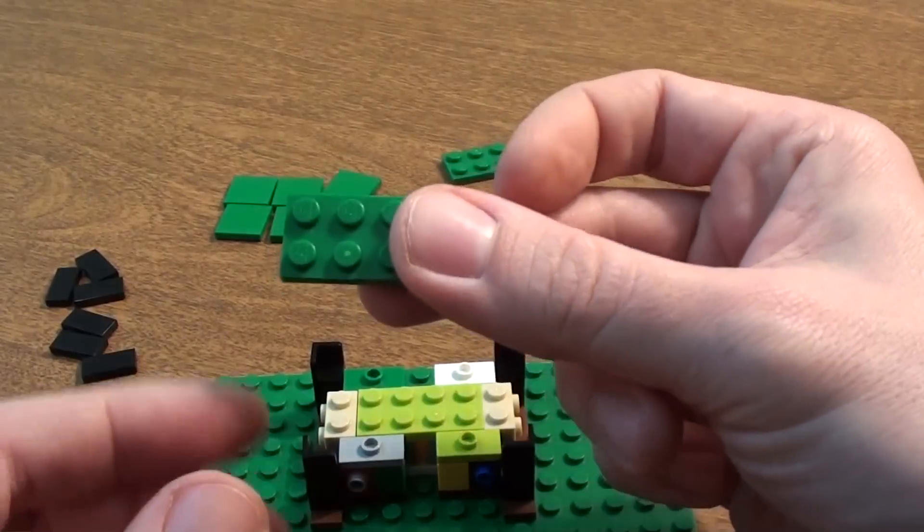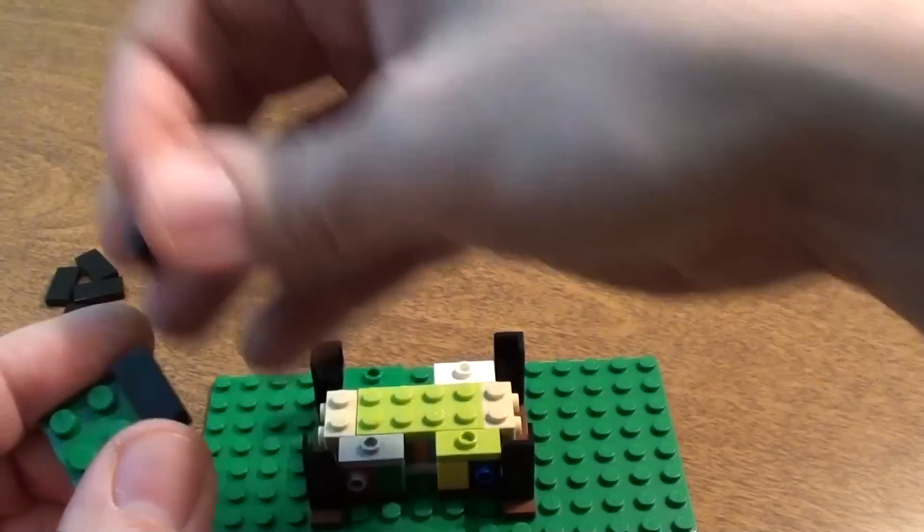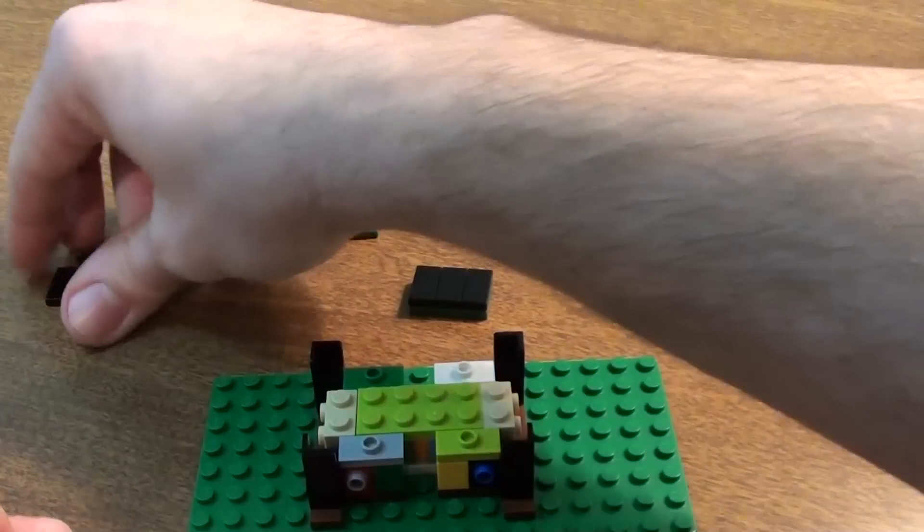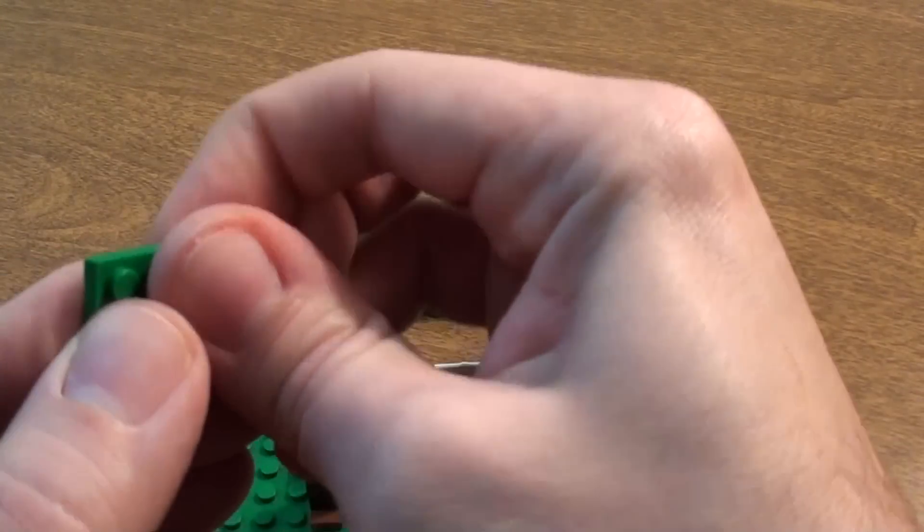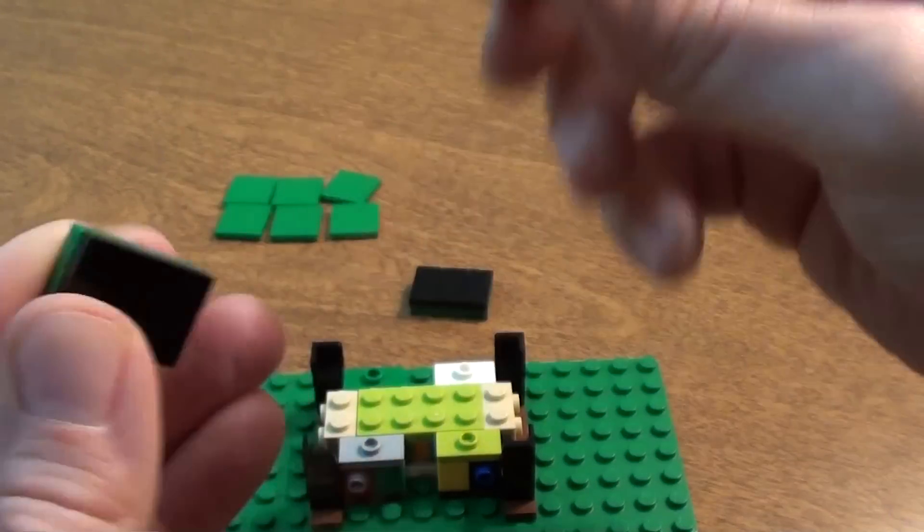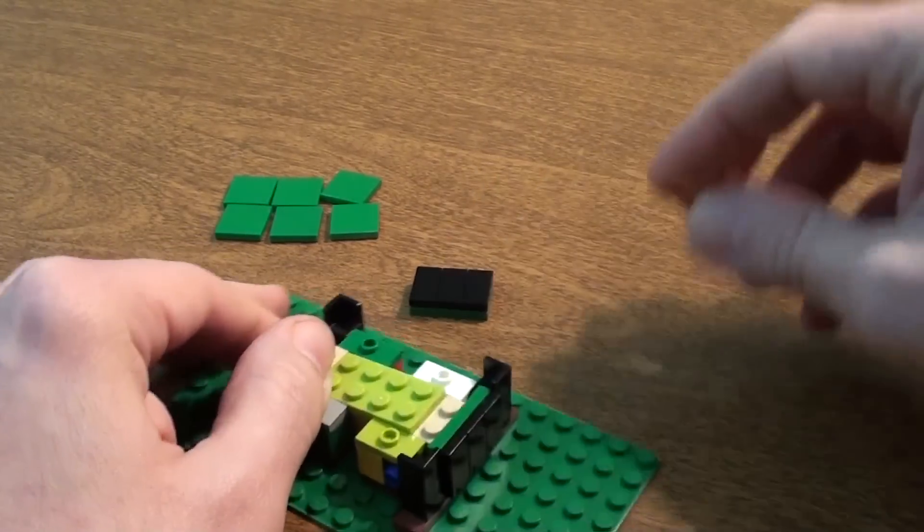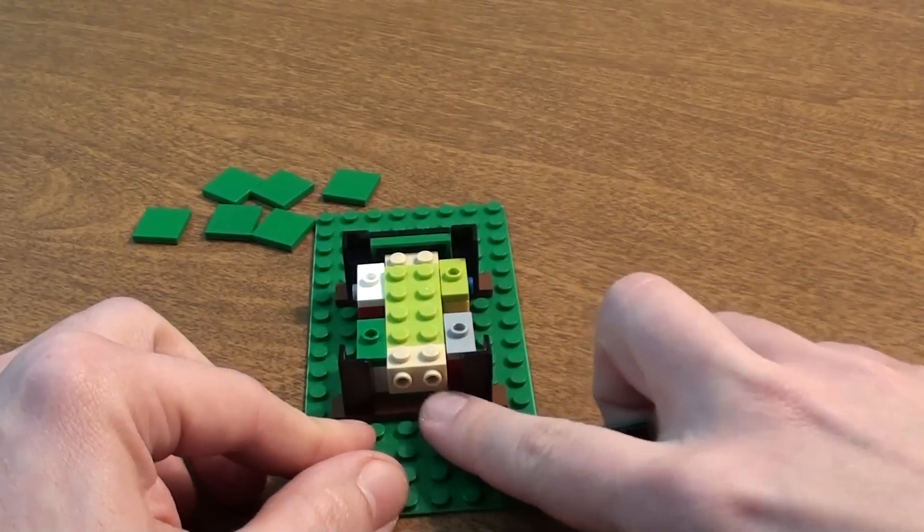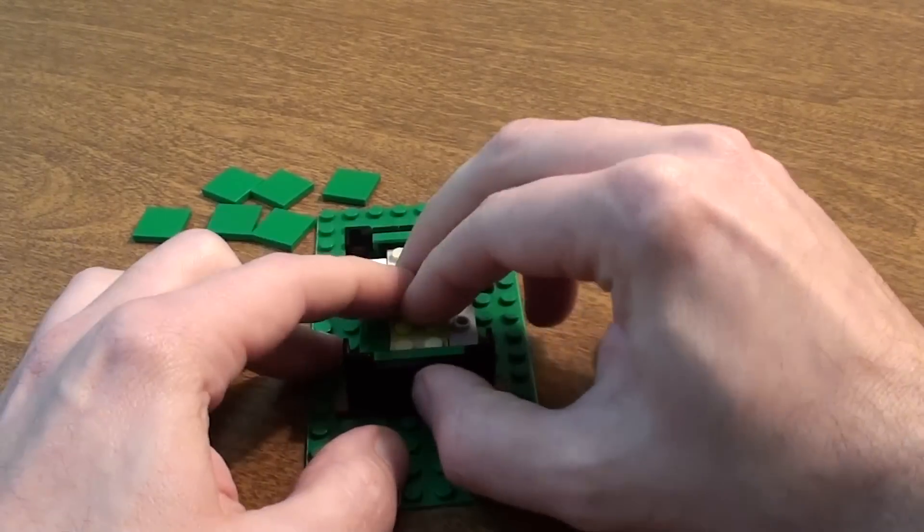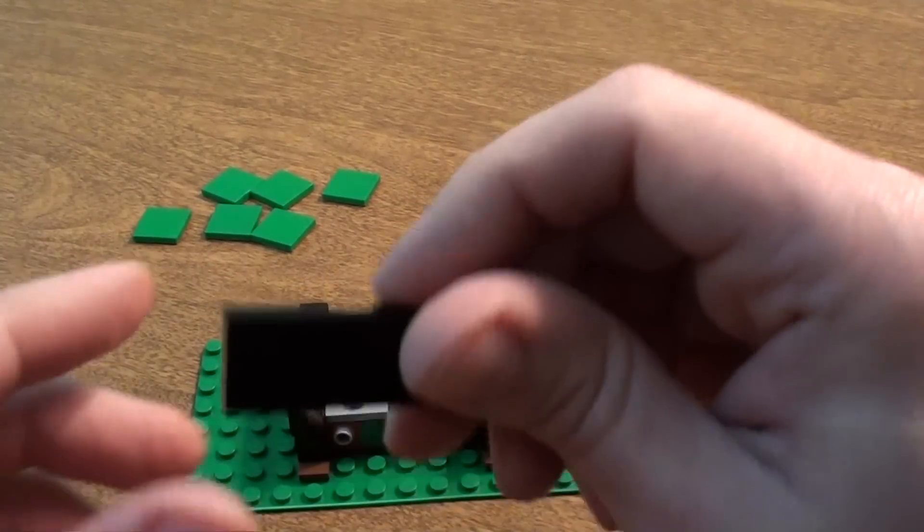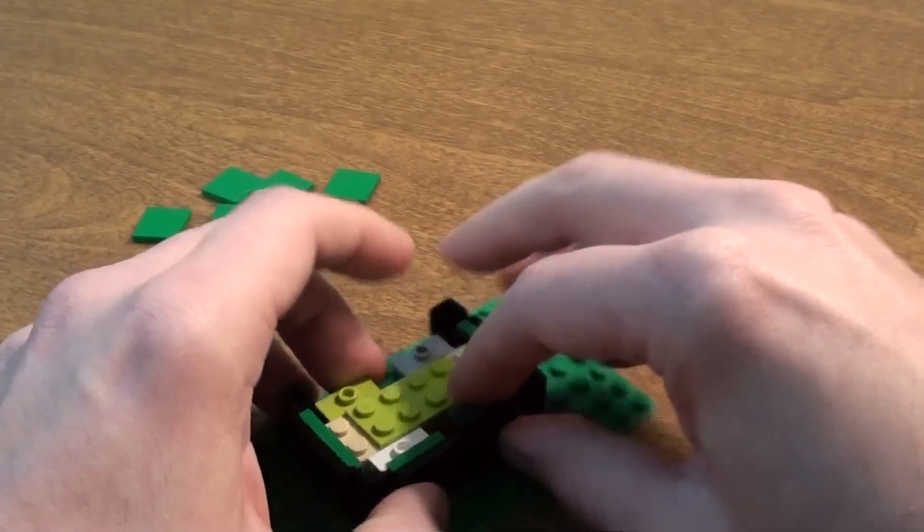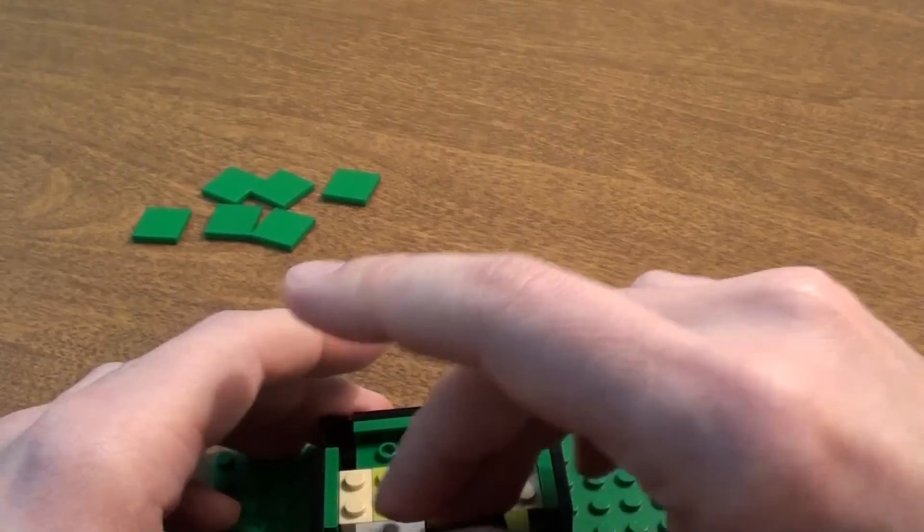Last but not least are these 2x3 plates. We're going to cover those up with three 1x2 tiles. Same thing with this one. Now put these right on this modified brick. You're going to go right in the center there where those holes are and push that in. Keep the green to the top, and put that in there.